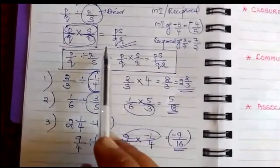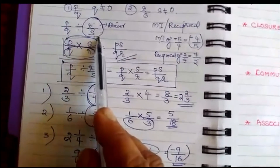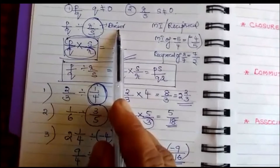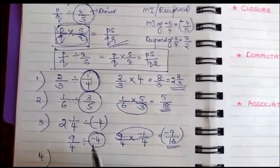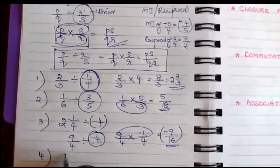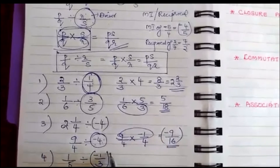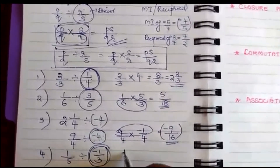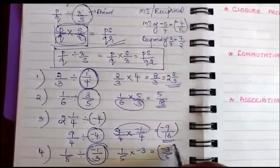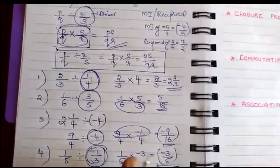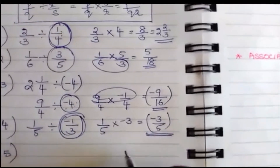Just like for subtraction you add the additive inverse, here the number to be divided is the dividend and the number in the denominator is the divisor — you use the divisor's reciprocal. For example: 1/5 divided by -1/3. The reciprocal of -1/3 is -3, so 1/5 × (-3) = -3/5.